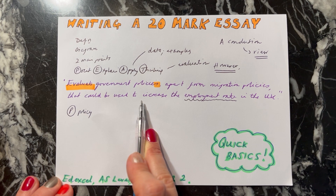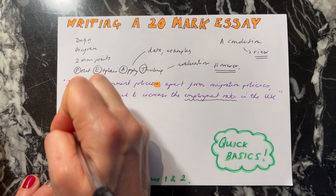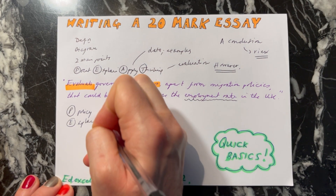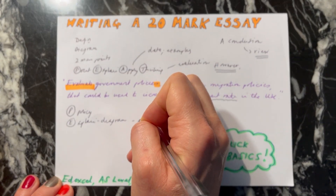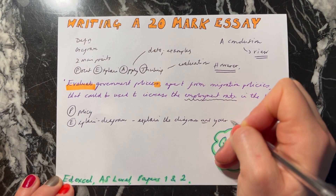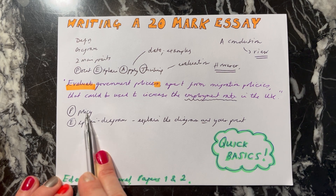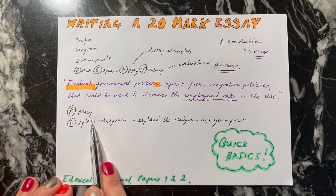Your first point will be thinking of your first policy — in this case, you state a policy that might be used to increase the employment rate. For example, improving education, which is a supply-side policy. You briefly explain your policy and then draw a diagram. You must explain the diagram as well. For instance, you could draw the long-run aggregate supply curve shifting to the right, explaining why improving education would cause an increase in productive potential and more people to be employed in the UK.